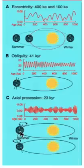All three parameters describe the amount and distribution of solar radiation received at any point on the Earth's surface.